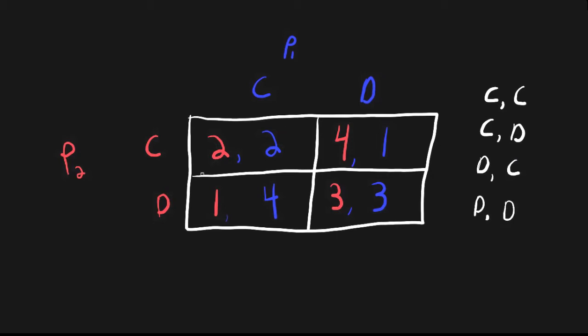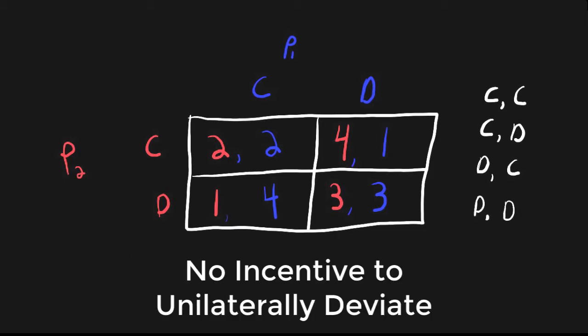Remember, the definition of a Nash equilibrium is that no player has an incentive to unilaterally deviate. So to see which one of these profiles is a Nash equilibrium, we will go through each one by one.